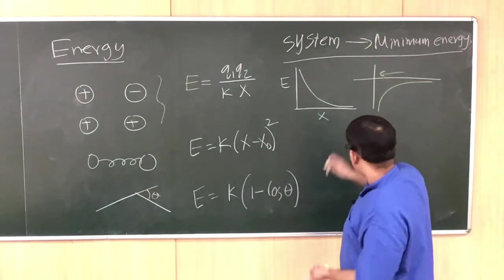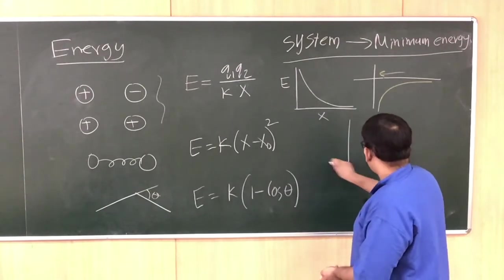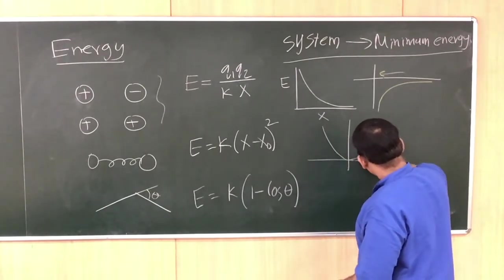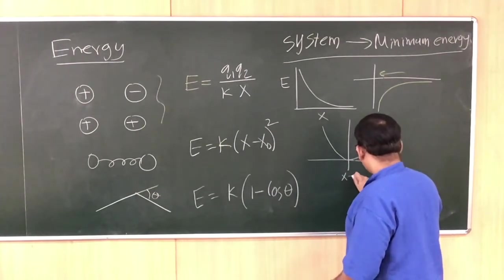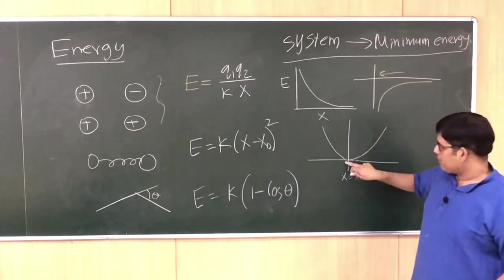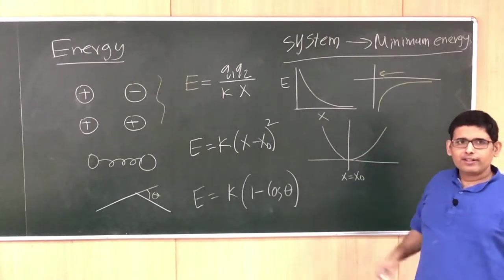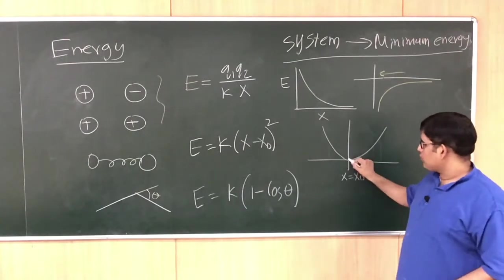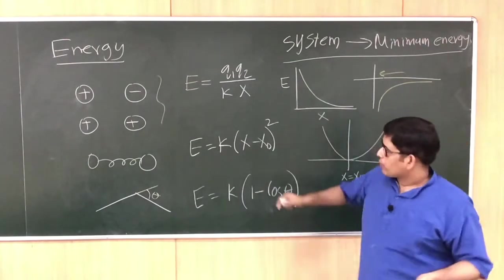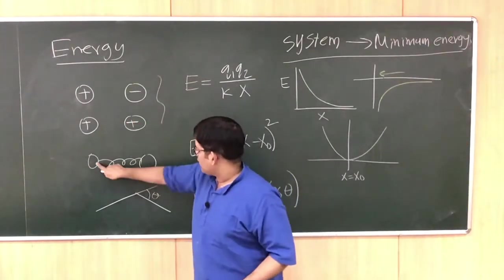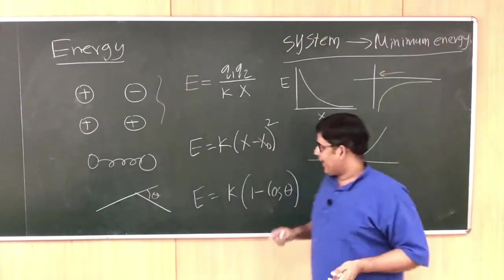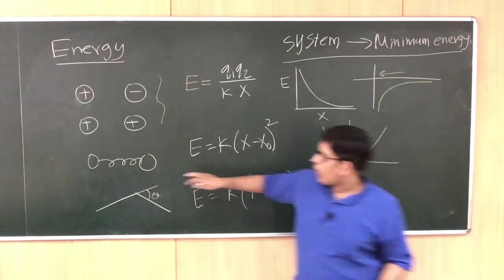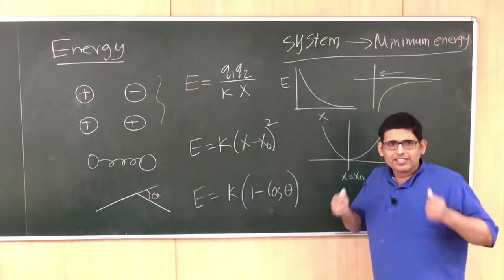In the particular case of a spring, if we plot the energy, the energy function would look something like a parabola. This is x equal to x₀. So when x equals x₀, it has a minimum energy, and for any other value of x, the energy is much larger. The system would go to this position — the position between the two molecules would be x₀, the bond length, for example. This would be the bond length where the system has minimum energy.